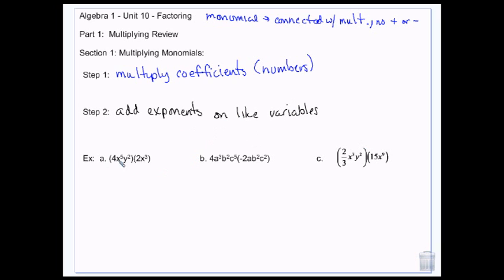So just as an example, I have 4x to the 5th y squared times 2x to the 3rd. The 4 times 2 go together, and the x's go together, and then the y here is just sort of by itself. So 4 times 2 is 8, x to the 5th times x to the 3rd is going to give me x to the 8th because I add the exponents — y squared.